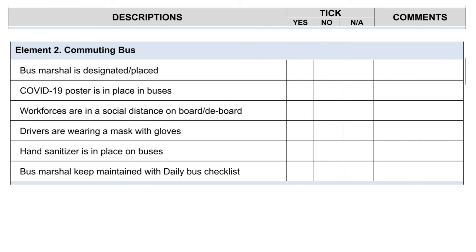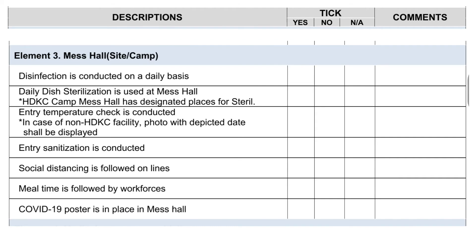Commuting bus. Bus marshal is designated and placed. COVID-19 poster is in place in buses. Workforces are in social distance on board and de-board. Drivers are wearing a mask with gloves. Hand sanitizer is in place on buses. Bus marshal keeps maintained with daily bus checklist. Element 3.